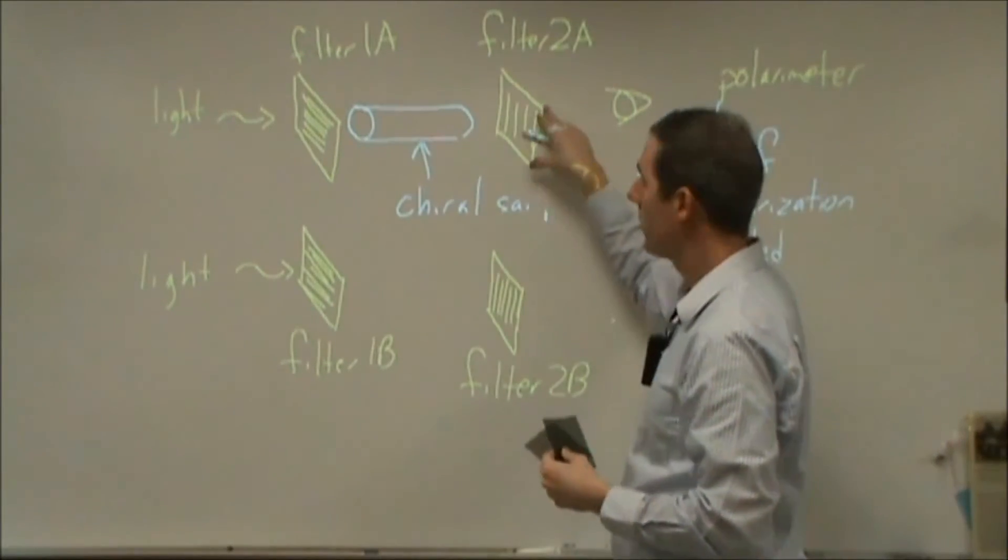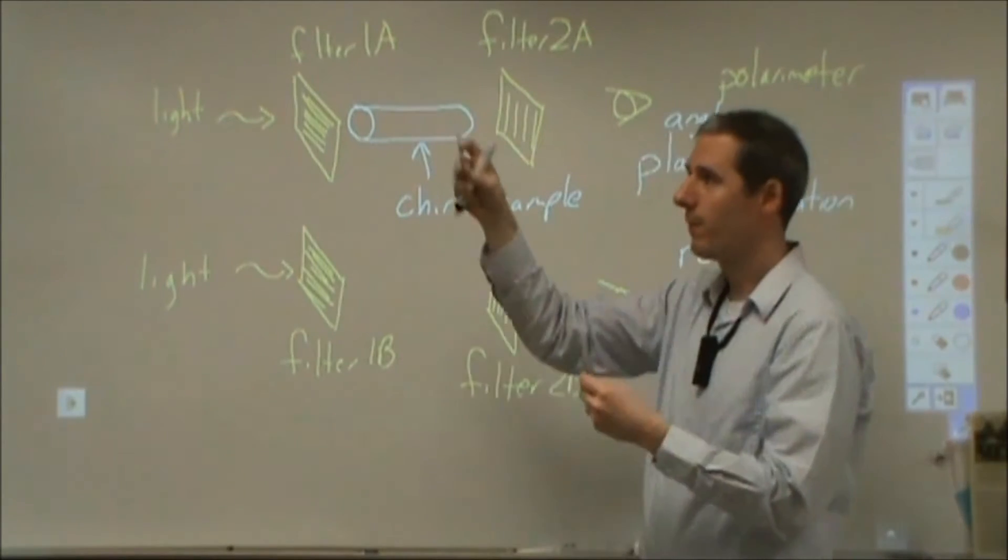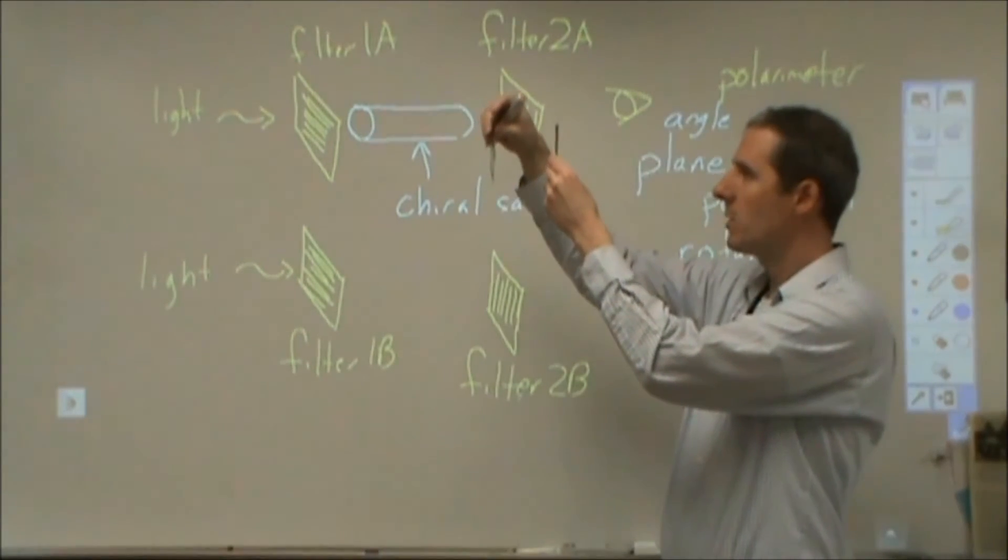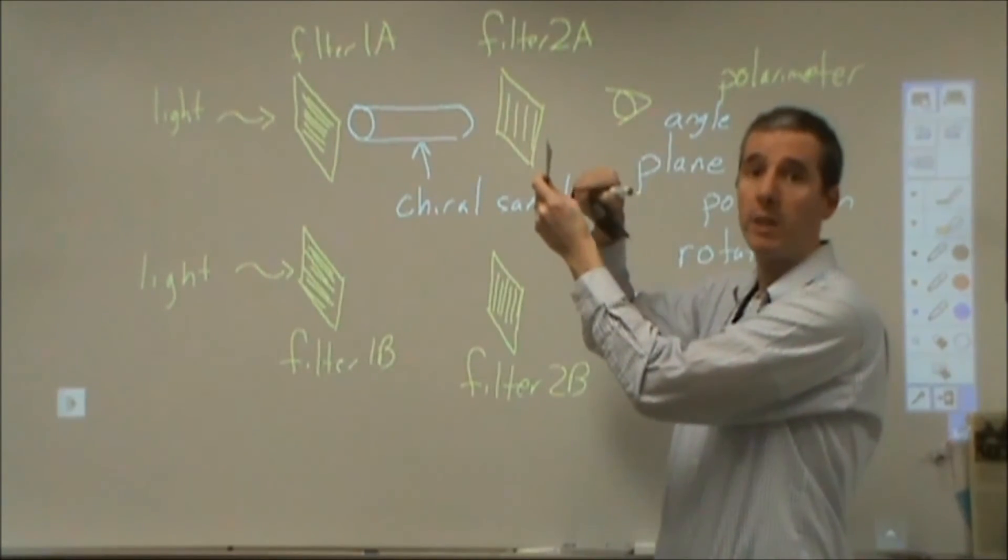The other way we can do this with our home sample is we can actually take the second filter and say, okay, well you rotated this much, well I'm going to rotate this much as well. And then I'm going to measure, okay, well how much did I rotate this?